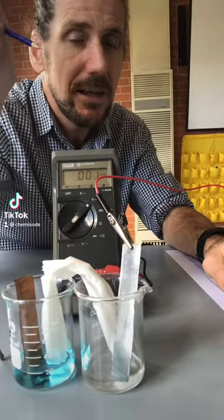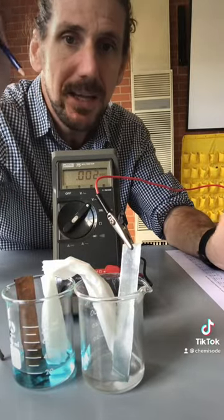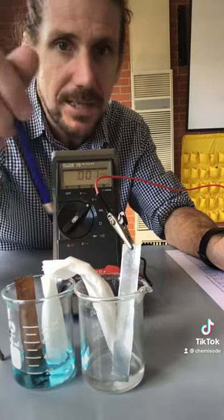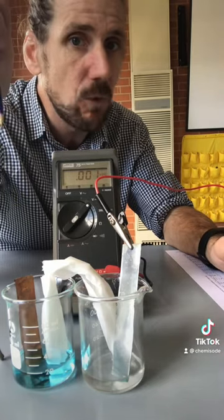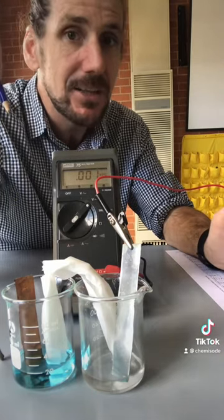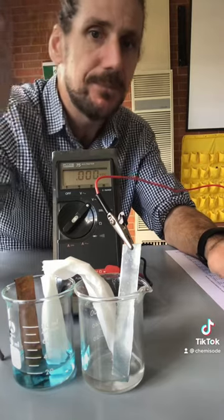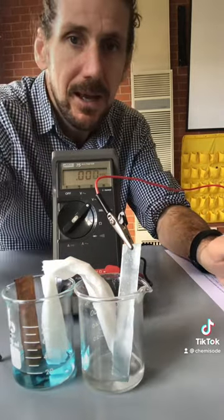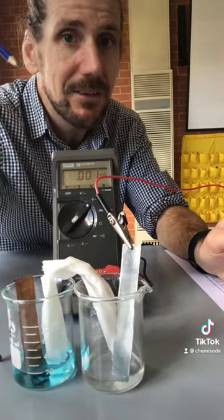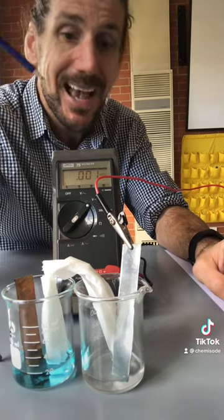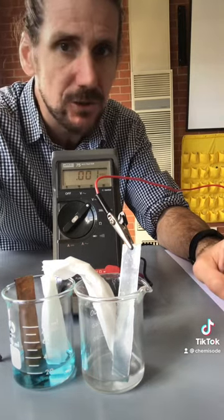Have you ever wondered how a battery works? Well in chemistry you'll learn about galvanic cells which are the foundations for what batteries actually are and it's all to do with redox reactions. In redox reactions we have a transfer of electrons and electricity is the flow of electrons.